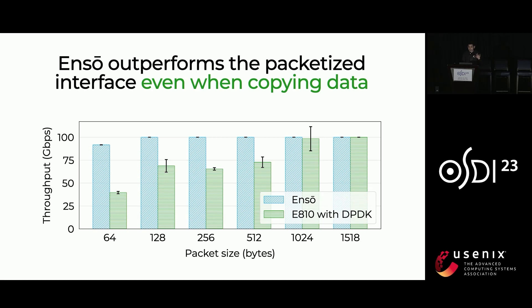Perhaps most surprisingly, even though ANSO is optimized for applications that consume data in order — since it places data sequentially in the same buffer — ANSO still outperforms the packetized interface even for applications such as virtual switches that need to reorder packets. This is despite the fact that ANSO requires an additional copy compared to DPDK. We show ANSO with the extra copy compared against DPDK with no copy, and the benefits of ANSO are so large that they outweigh the cost of the copy.